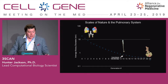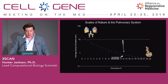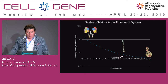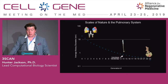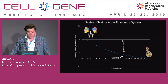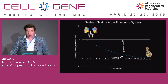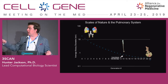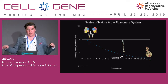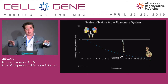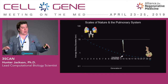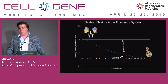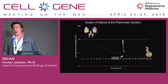On the top left, we have the trachea, which is generation zero, with an average luminal diameter of around 18 millimeters. Around the 14th generation, we have the transitional bronchioles, including the terminal bronchioles, which signals the beginning of the respiratory zone. At the terminal ends of the airways are the alveolar sacs and alveoli, with an average diameter of 200 to 300 microns — that sub-500 micron range where we operate, which is difficult to capture with CT, MRI, or silicone casts.